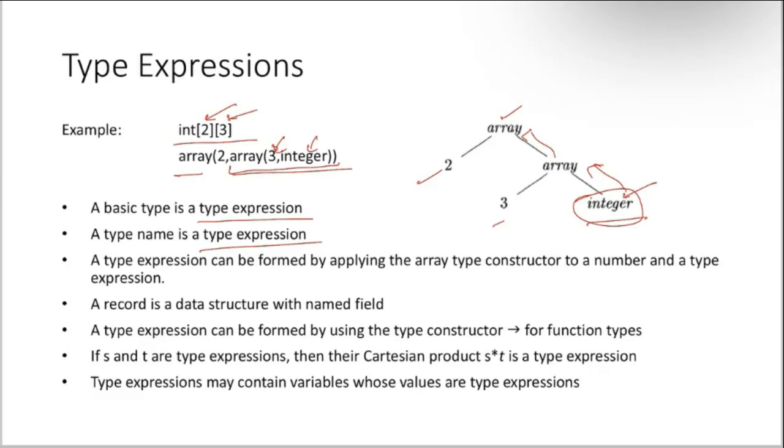A type expression can be formed by applying the array type constructor to a number and a type expression. A type expression can be formed by using the type constructor. For function types, if S and T are type expressions, then their Cartesian product S multiplication T is also a type expression. That means different combinations between S and T. Type expressions may contain variables whose values are type expressions again.